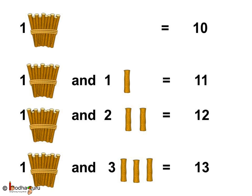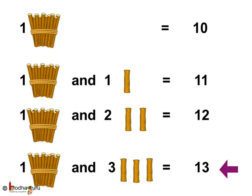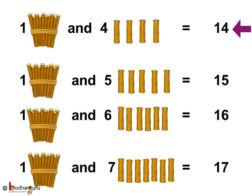So, let us summarize again. 1 ten equals 10. 1 ten and 1 is 11. 1 ten and 2 is 12. 1 ten and 3 is 13. 1 ten and 4 is 14. 1 ten and 5 is 15. 1 ten and 6 is 16.